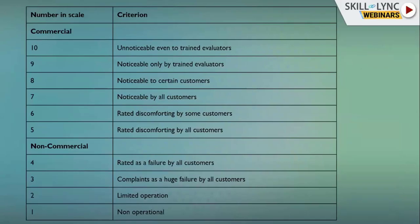A trained NVH evaluator ranks vehicle NVH performance on a scale of 5 to 10. A rating of 5 means all customers notice discomfort and the vehicle has multiple NVH issues. At 8, only certain customers notice the issue. At 9 or 10, only trained evaluators can detect it — customers cannot. Based on this ranking from the testing phase, the simulation engineer works to provide measures to reduce the identified problems.